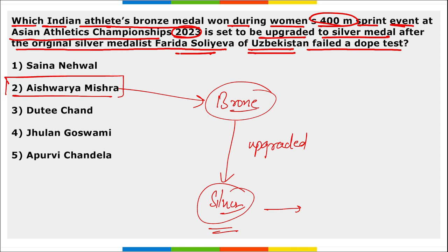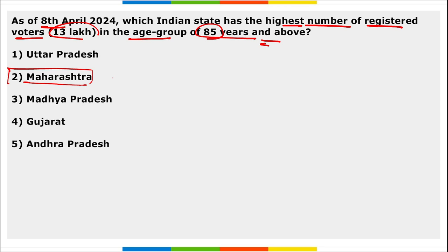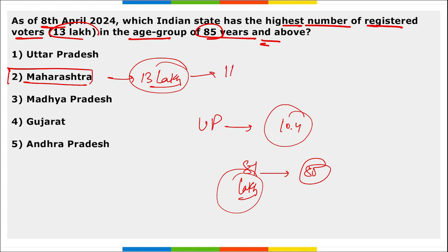As of 8th April, which Indian state has the highest number of registered voters in the age group of 85 years and above? It is Maharashtra, with 13 lakh registered voters in the age group of 85 years and above. According to this data, Uttar Pradesh has 10.4 lakh registered voters in the same group, Bihar has 6.6 lakh, and nationally there are a total of 81 lakh voters above the age of 85.